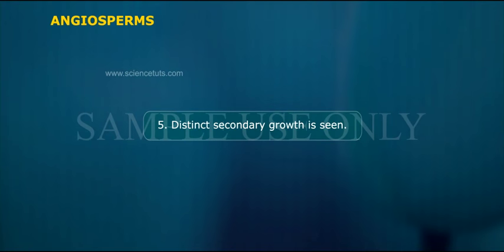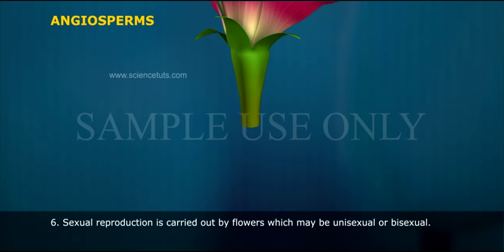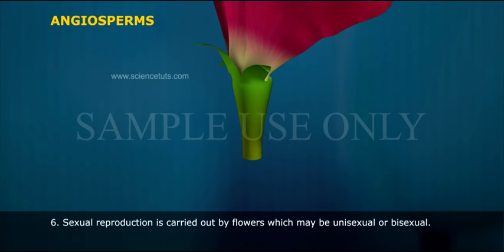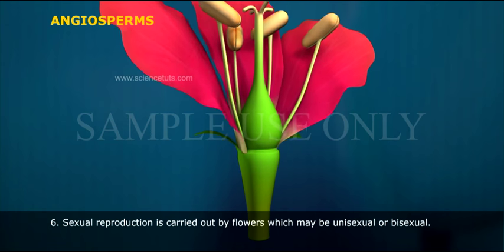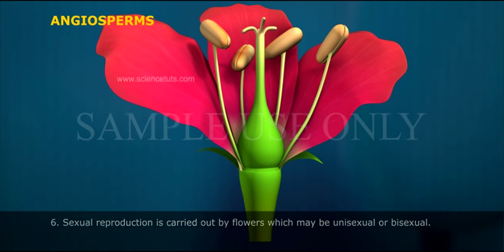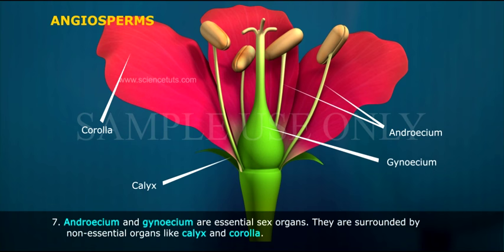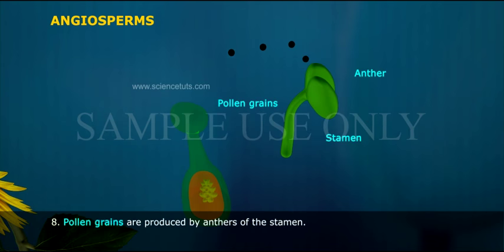Fifth, distinct secondary growth is seen. Sixth, sexual reproduction is carried out by flowers, which may be unisexual or bisexual. Seventh, androecium and gynoecium are essential sex organs, surrounded by non-essential organs like calyx and corolla.